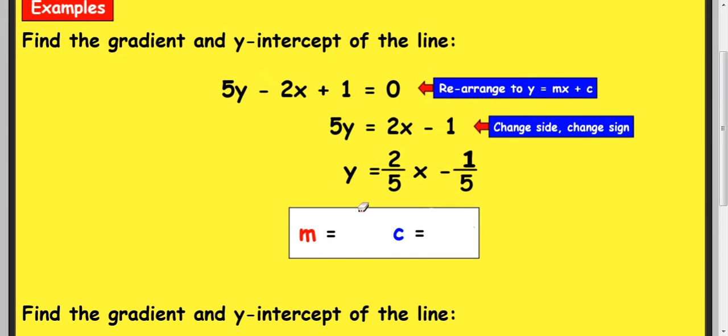Your gradient is the value in front of the x. So it's 2 fifths. And your intercept is the value at the end, negative 1 fifth.